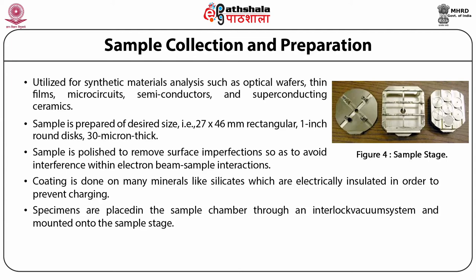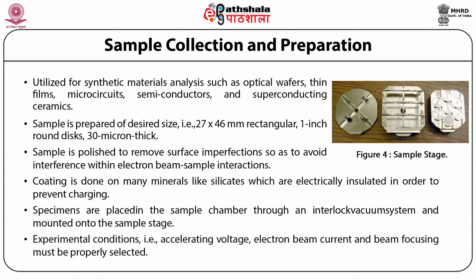The specimens are placed in the sample chamber through an interlocked vacuum system and mounted onto the sample stage. High vacuum can be achieved by pumping the sample chamber. Then, the experimental conditions — accelerating voltage, electron beam current and beam focusing — must be properly selected.